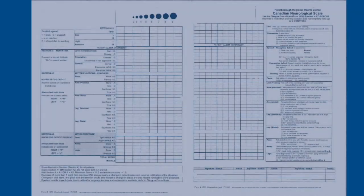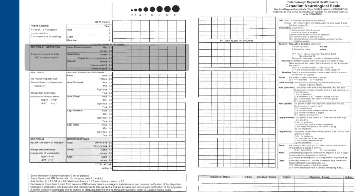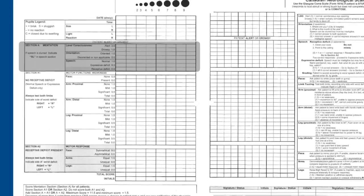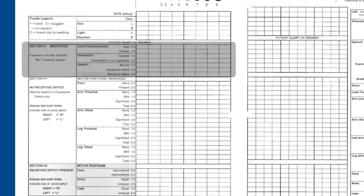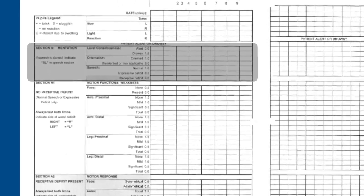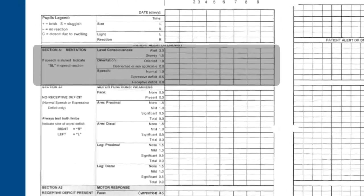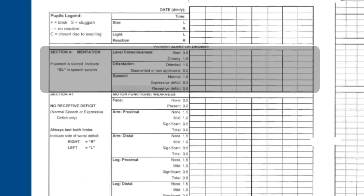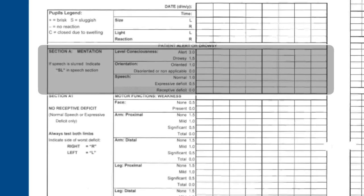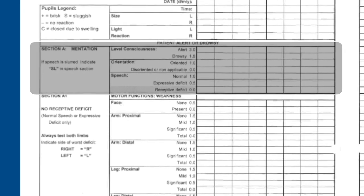Section A will be completed on all patients whose level of consciousness is alert to drowsy. Patients who are stuporous or comatose will be assessed using the GCS. The nurse now completes Section A.